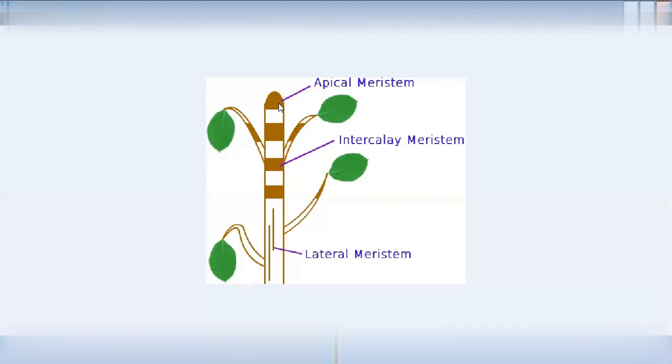We can exhibit growth only up to a certain age. We don't have lifelong growth. That's why growth is an inevitable thing for plants — it is continuous growth. There are a few characteristic features in meristematic cells.